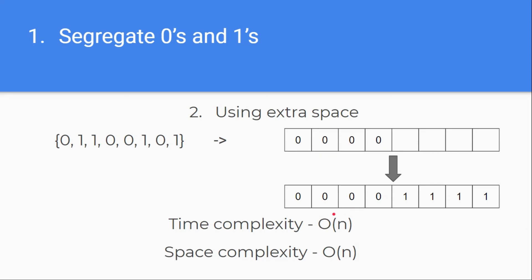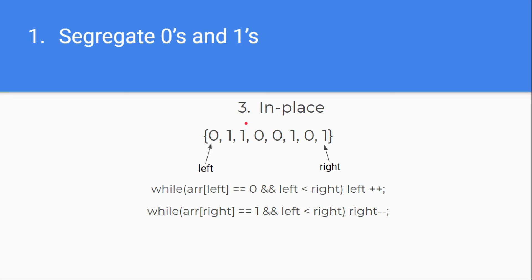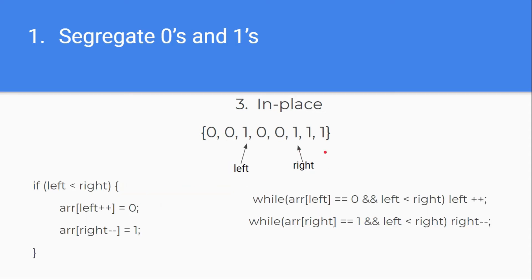Our time becomes efficient but space becomes inefficient. So our next thought will be for an in-place solution — rearranging the array without extra space, although we can use an extra variable for temporary purposes. This gives time complexity O(n) and space complexity O(1). We can use two pointers: one starting from index zero and the other from the end index (length minus one), iterating until the left pointer overlaps the right pointer.